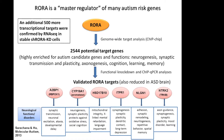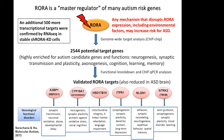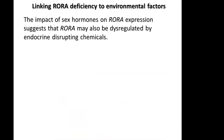By RNA-seq, we also validated another 500 more transcriptional targets of RORA. The bottom line is that we feel that any mechanism — whether it's genetic, epigenetic, or environmental — that disrupts RORA expression may increase risk for autism by dysregulating all of the downstream genes regulated by RORA. So now to get to the environmental component.